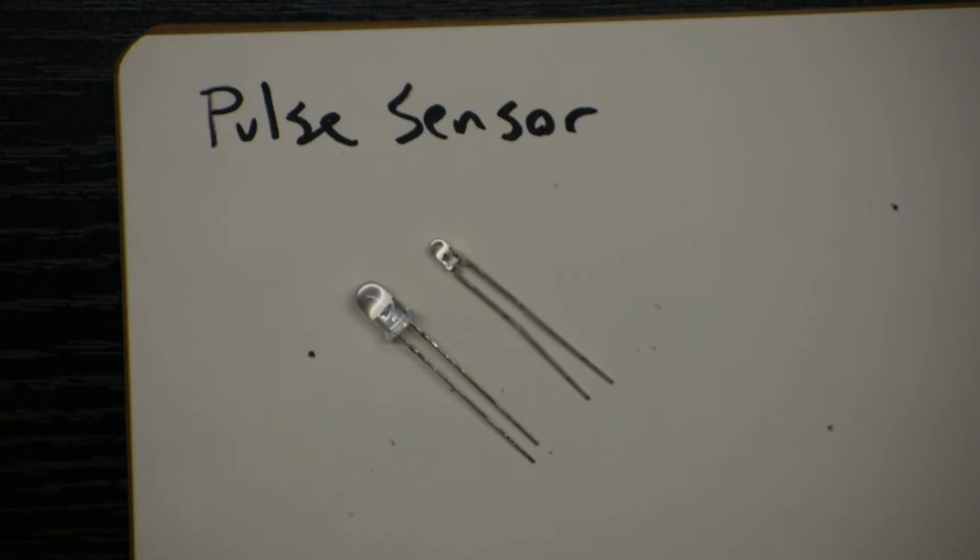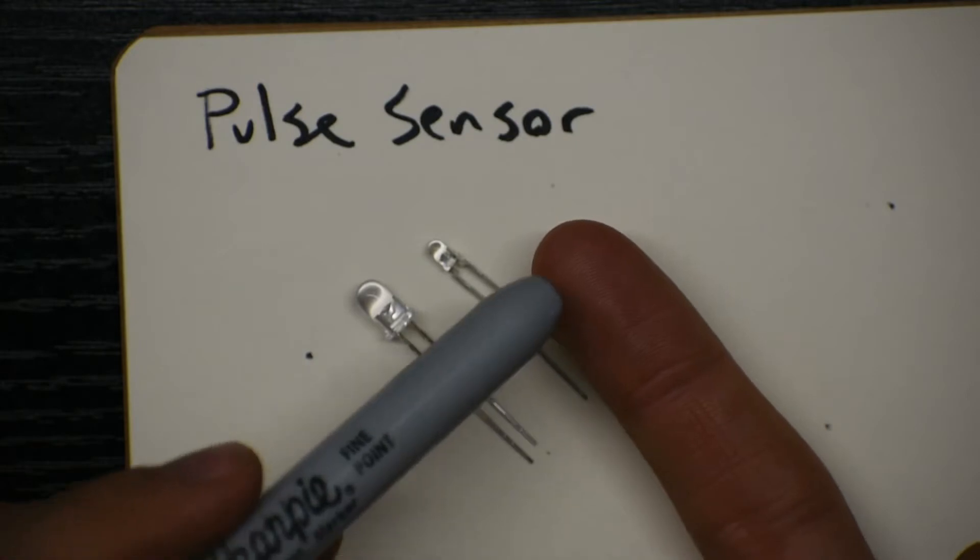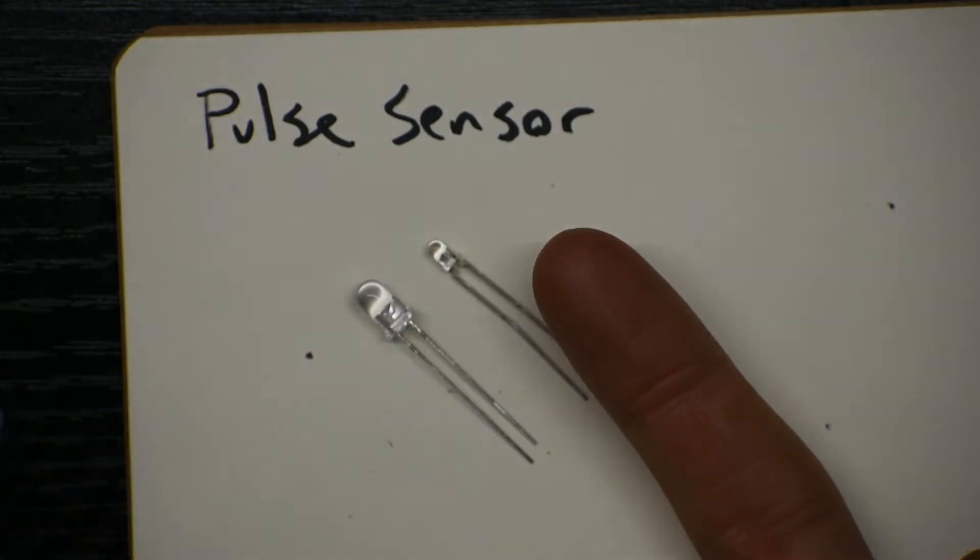So here's our first really fun assignment to build. We're going to build a pulse sensor. And by pulse sensor, what I mean is we're going to find when does our heartbeat by looking at the color change in our finger.